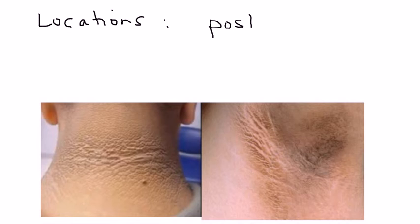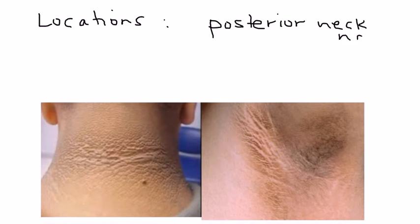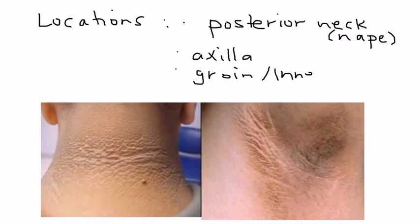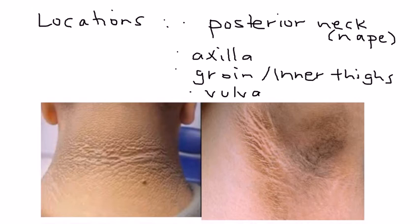In terms of locations, the most common areas where acanthosis nigricans can appear are the posterior neck, sometimes referred to as the nape, and the axilla or armpit. Other locations include the groin or inner thighs, and it can also appear in the vulva or in the umbilical area.